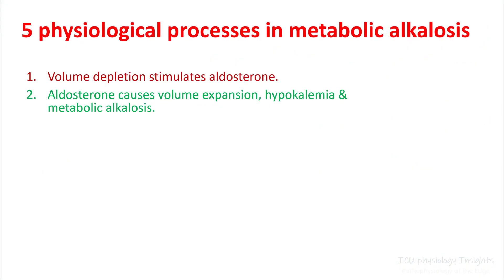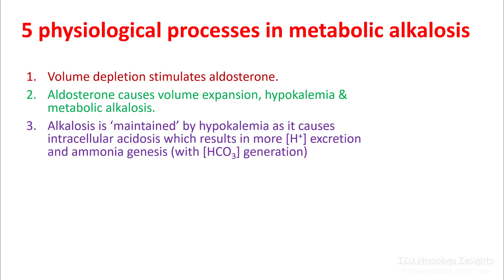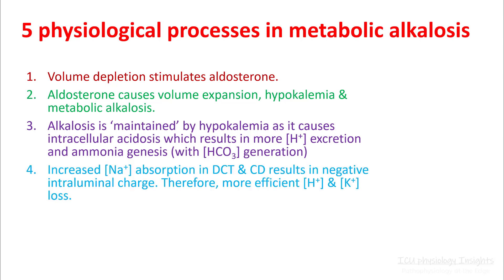In the previous lecture we understood five physiological processes in metabolic alkalosis. Those were: volume depletion stimulates aldosterone production and this causes volume expansion, hypokalemia, and metabolic alkalosis. The alkalosis is then maintained by hypokalemia as it causes intracellular acidosis, which results in more hydrogen ion excretion and ammoniogenesis, and this also generates bicarb.